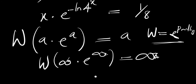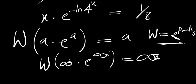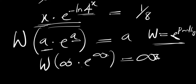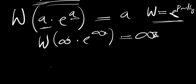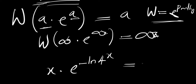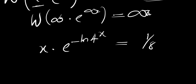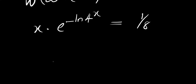Now we are going to apply this function. Before we can do that, remember that what we have at the base must be exactly the same as what we have at the exponent. We still have x times e^(negative ln(4^x)) equals 1/8, and we need to manipulate it so the base and exponent match.